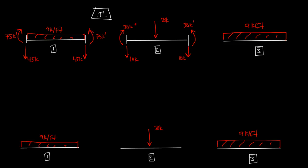For element 3, it's the same as element 1, so we have two reactions going down: 45 kips and 45 kips. Then we have a bending moment of 75 kip-foot on the left and 75 kip-foot on the right.